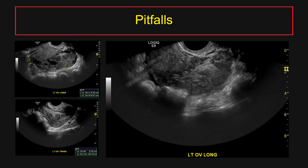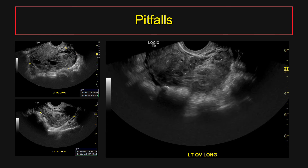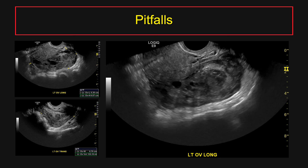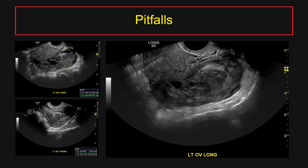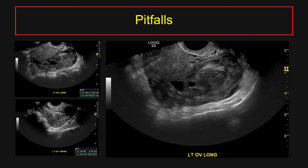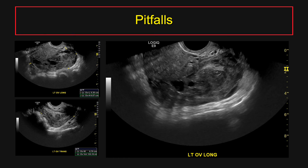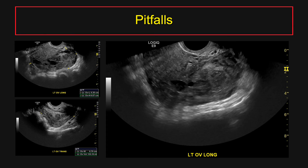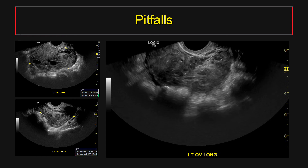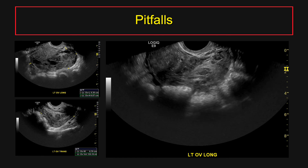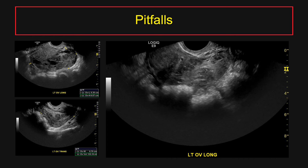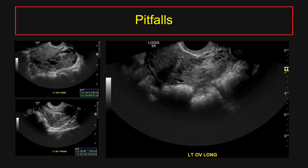Let's look at some pitfalls. Unilateral ovarian enlargement, stromal edema, and peripheralization of the follicles are non-specific signs. They have a reported sensitivity for torsion of about 85% but a specificity of less than 20%. This is a 27-year-old woman with acute left lower quadrant pain. Her left ovary is very enlarged, very edematous, and heterogeneous with a volume of 135 ml, lacking classic features of peripheralization of the follicles. This patient was taken to the operating room given clinical concern for torsion and found to have a ruptured hemorrhagic cyst — no torsion.